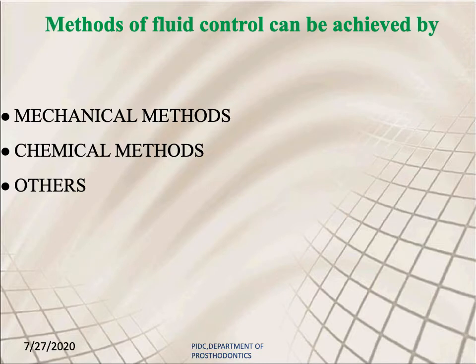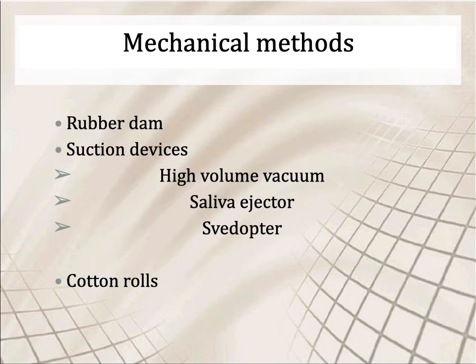Methods of fluid control can be achieved by mechanical methods, chemical methods, and mechanochemical methods. Mechanical methods include use of rubber dam, use of suction devices like the high volume vacuum, saliva ejector or sweatopter, and the use of cotton rolls.